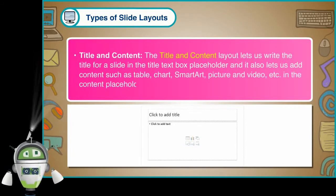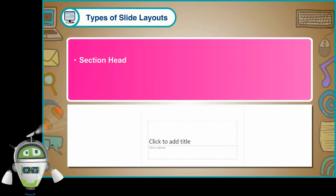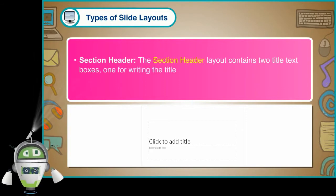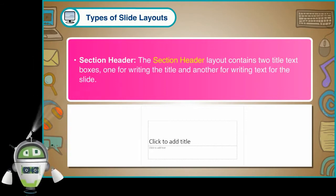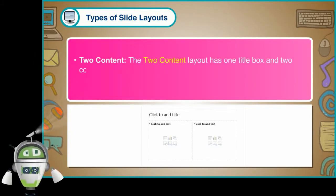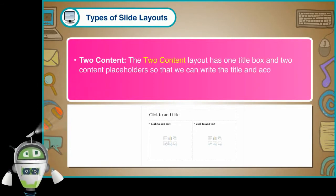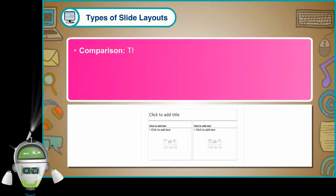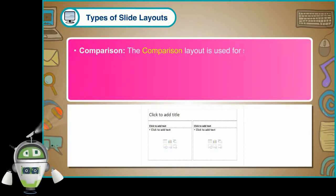The Section Header layout contains two title text boxes, one for writing the title and another for writing text for the slide. The Two Content layout has one title box and two content placeholders so that we can write the title and accommodate two different types of content in a slide.